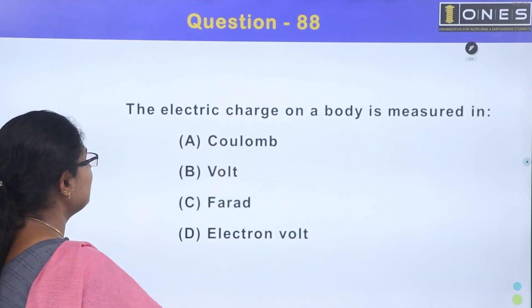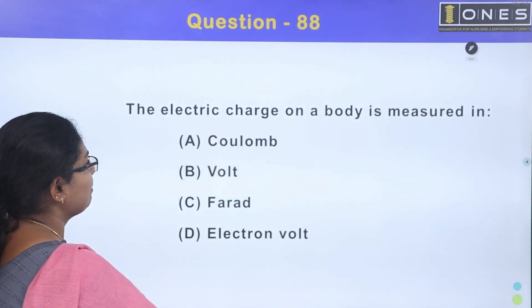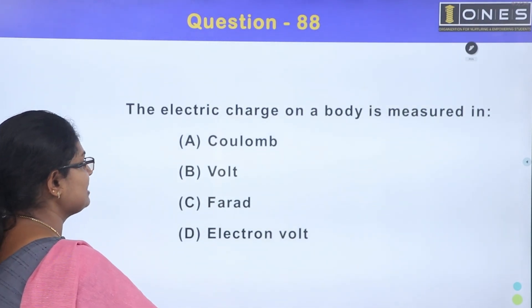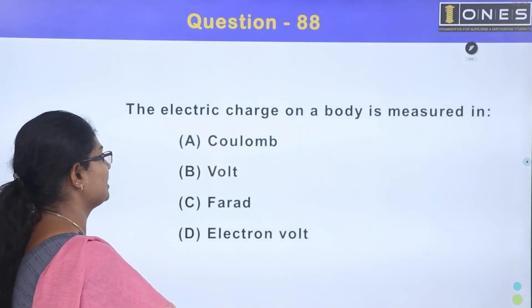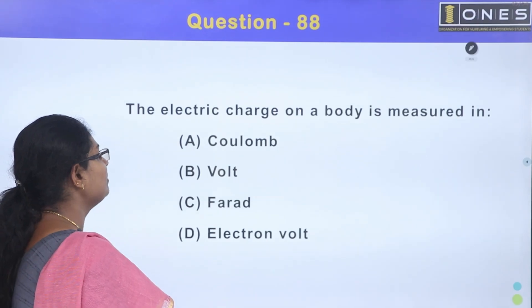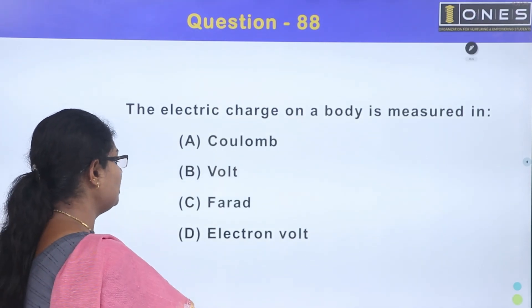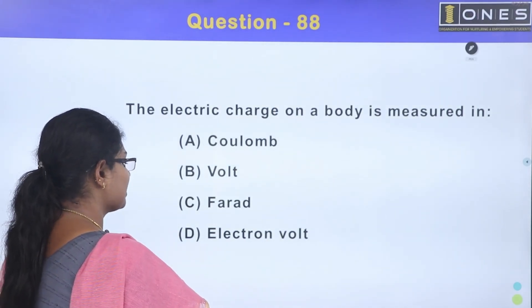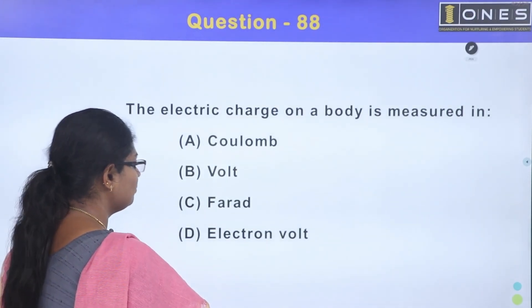The electric charge on a body is measured in: Option A, Coulomb; Option B, Volt; Option C, Farad; Option D, Electron. The answer is Option A, Coulomb.